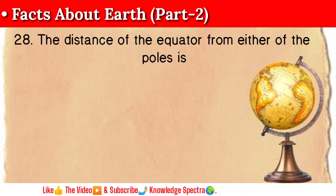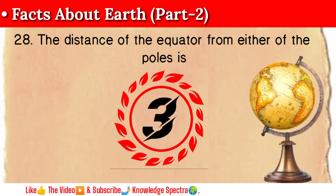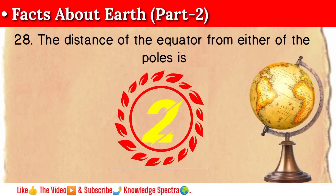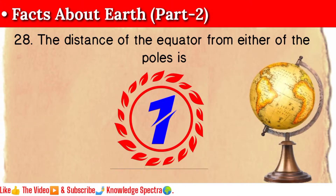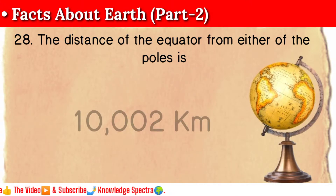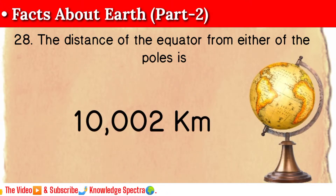Question 28: The distance of the equator from either of the poles is 10,002 kilometers.